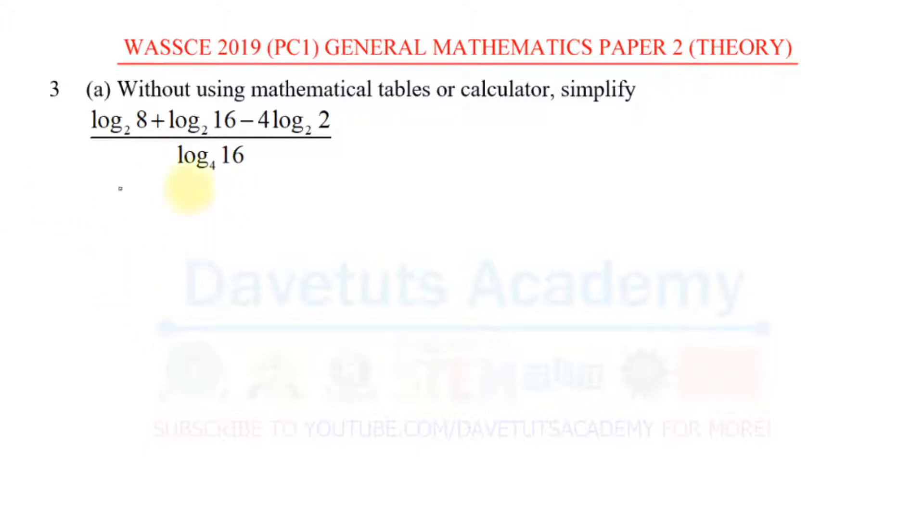One rule of logarithm that will help us a lot is to know that we have logarithm to a particular base, let's say a, of the particular base again raised to power m. This will be the same as m log to base a of a, and log to base a of a is 1, so this will be m. If we employ this and apply it in this particular equation, it's going to be easily simplified for us.